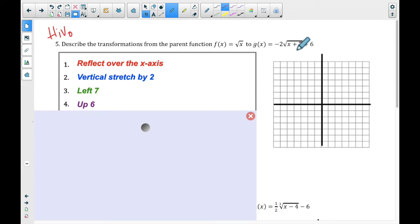The 7, because it's inside, it's the opposite of how it seems. Instead of the right 7, this one is actually left 7. And then the plus 6 is up 6.